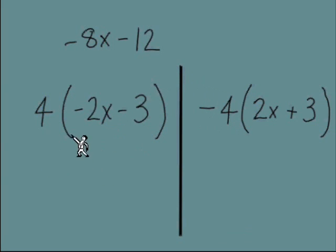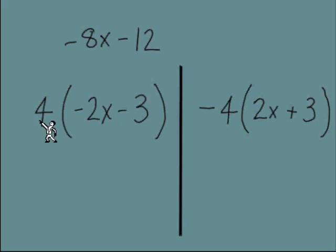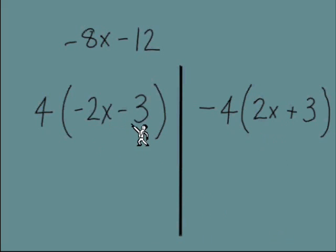So here's what I want you to observe: on one side, we factored out a positive number for the GCF, and on the right side, we factored out a negative number. When we factor out opposites, the signs of the terms inside the parentheses are also opposites. So when we change a positive 4 into a negative 4, the terms inside also had their signs changed — from negative 2x to positive 2x, and from negative 3 to positive 3.